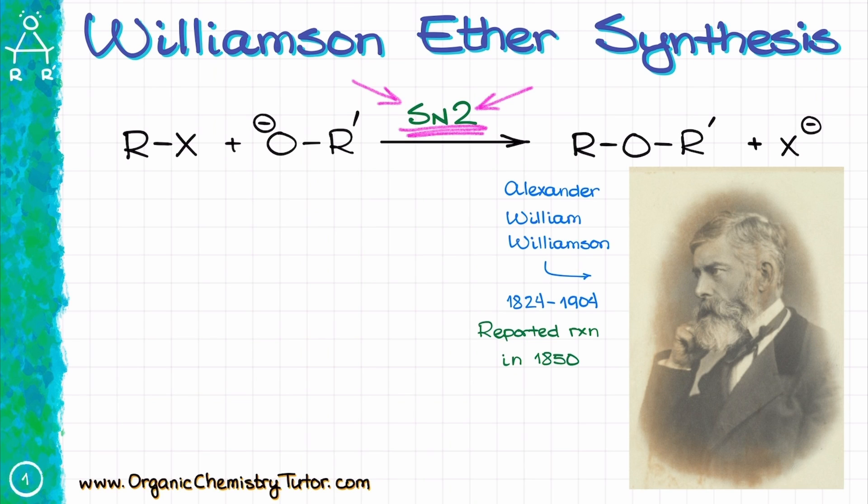Nowadays, we know that the Williamson ether synthesis is a reaction between an alkoxide and alkyl halide, and mechanistically speaking, this is an SN2 process. So, for instance, if I were to take bromoethane and then treat that with sodium ethoxide, I will end up making diethyl ether as a product.